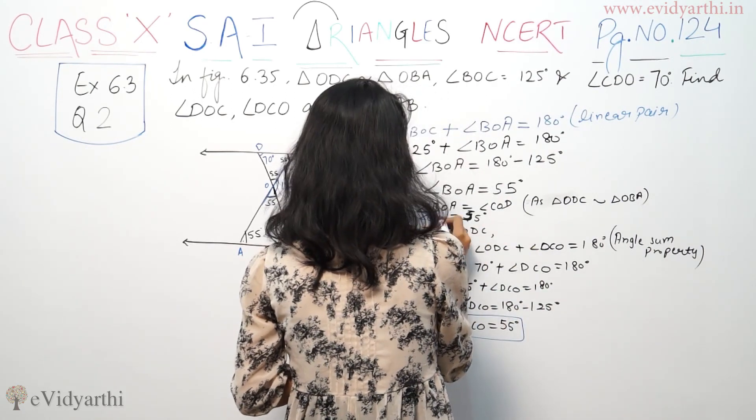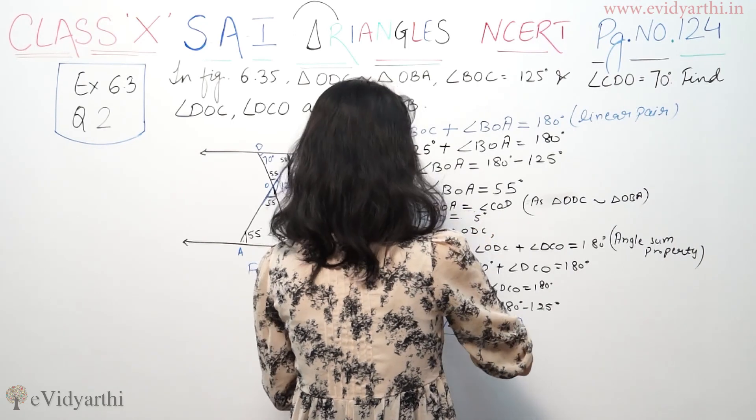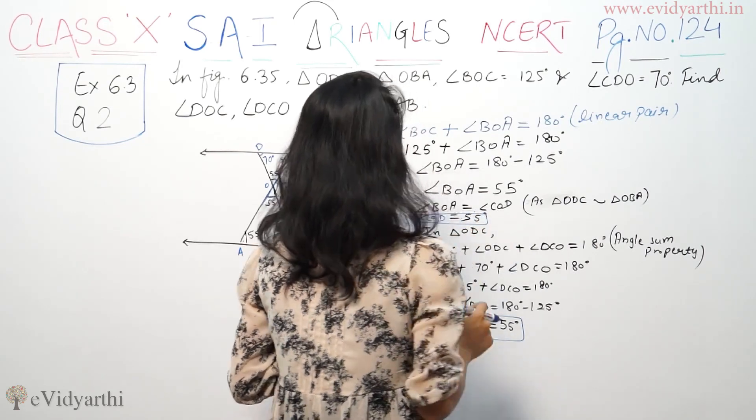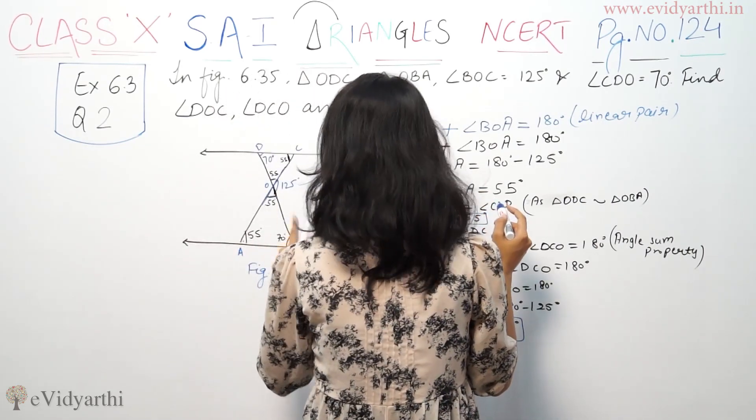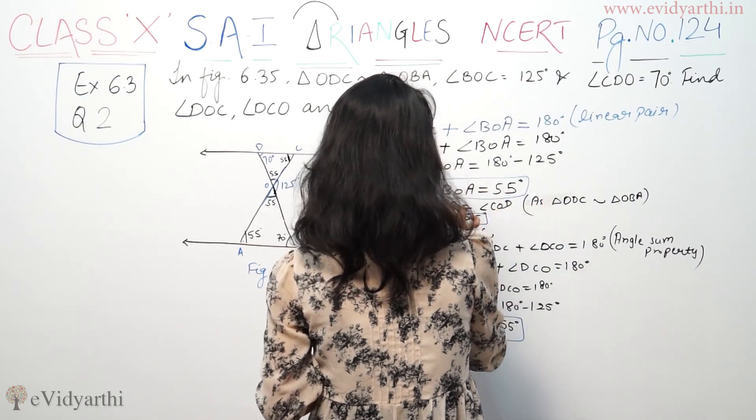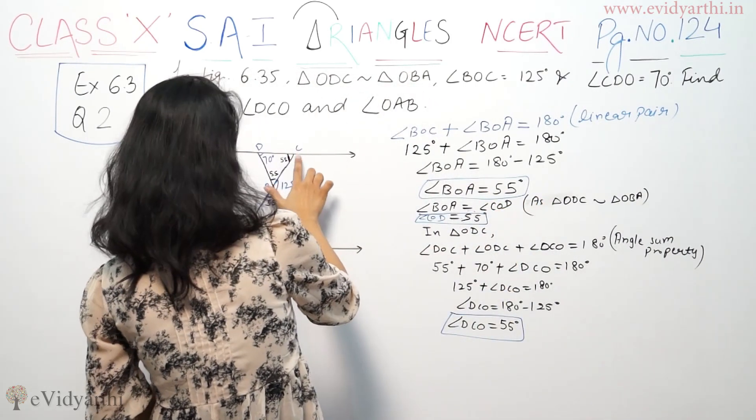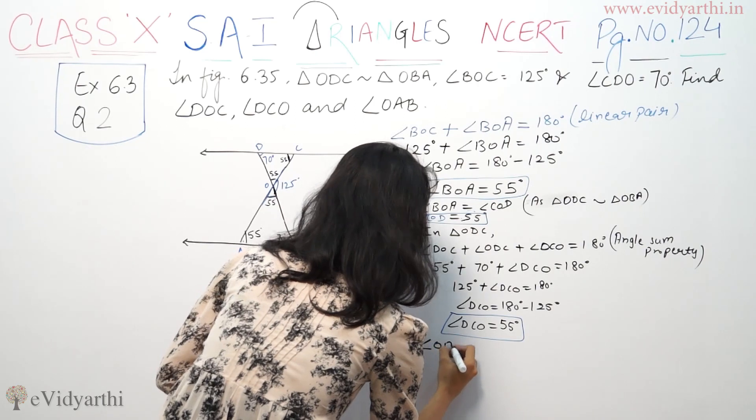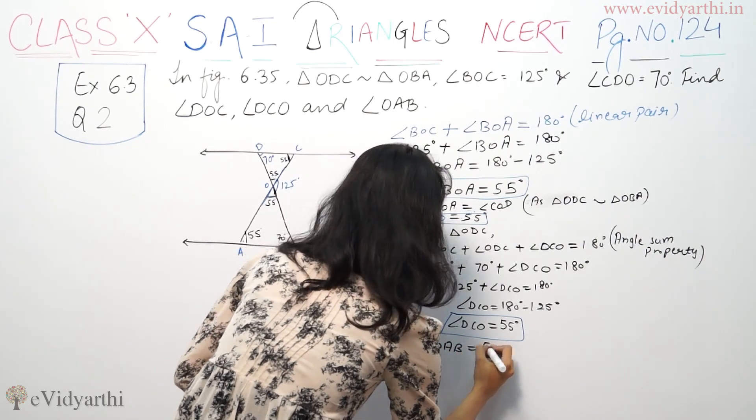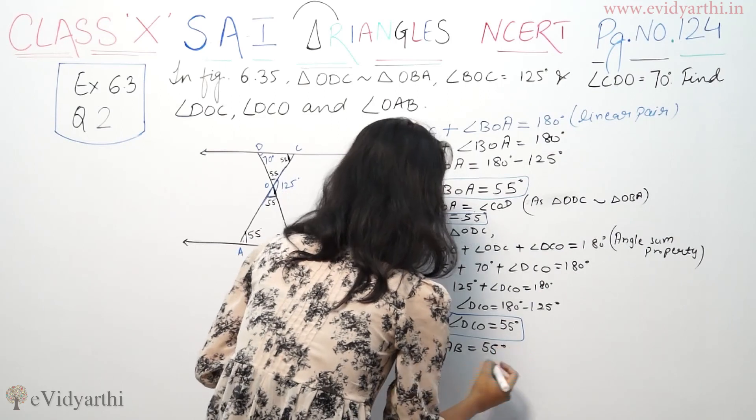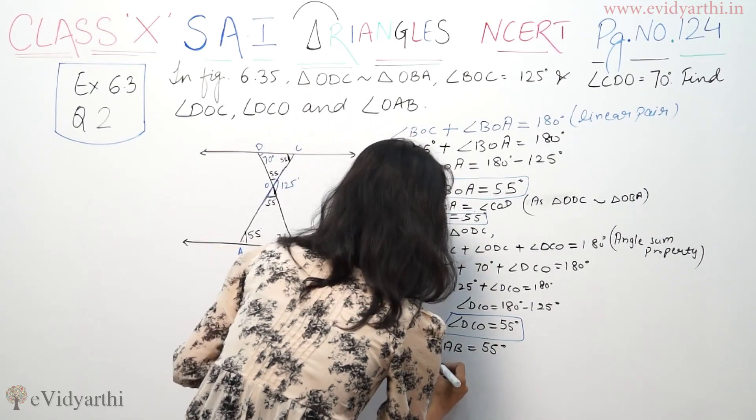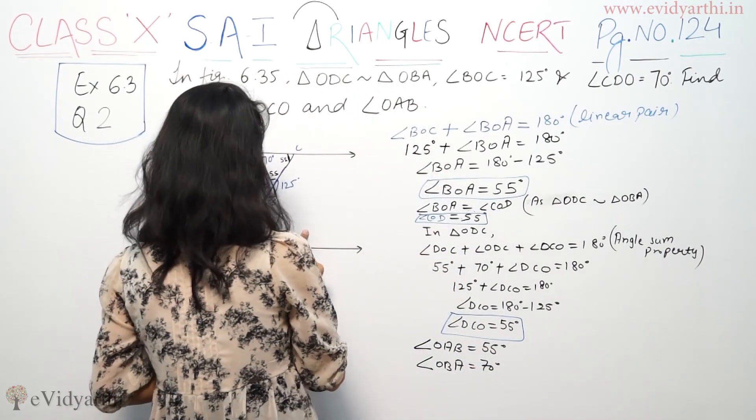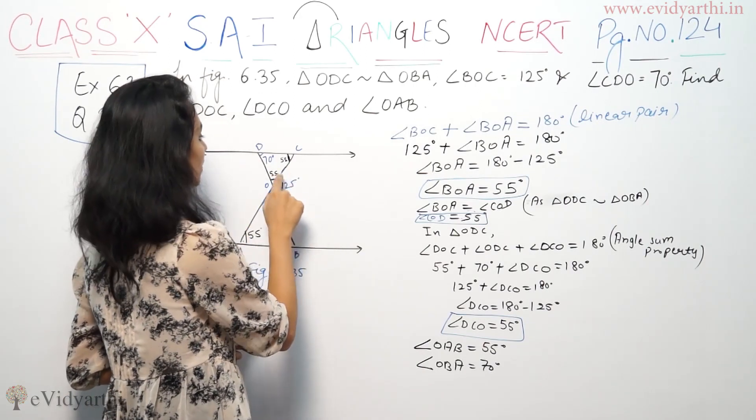DCO is equal to 55 degrees. COB is equal to 65 degrees. DOA is 55. So, DCO is 55. This angle is 55. And OAB is 55. Our angles are similar. And our angle OBA, we are at the same degree because the angles are similar. This angle is 55, this is 55, 55, 55.